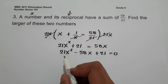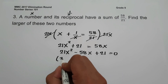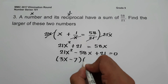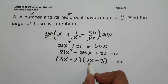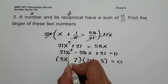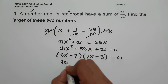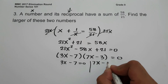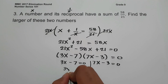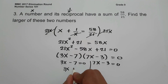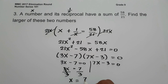The factors of 21x squared minus 58x plus 21 are 3x minus 7 and 7x minus 3. Multiplying these gives 21x squared minus 58x plus 21. Setting each factor equal to 0: 3x minus 7 equals 0 and 7x minus 3 equals 0. Moving negative 7 gives 3x equals 7, so x equals 7 over 3.